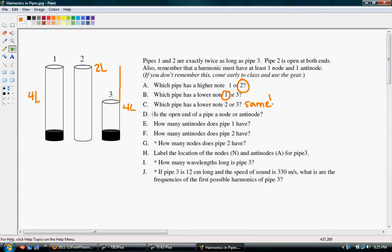D asks, is the open end of a pipe a node or anti-node? In order for the harmonic to be possible, there must be an anti-node at the open end. So how many anti-nodes does pipe 1 have? Well, if we have a node here, we'll have an anti-node at the top. So how many anti-nodes does pipe 1 have? 1.